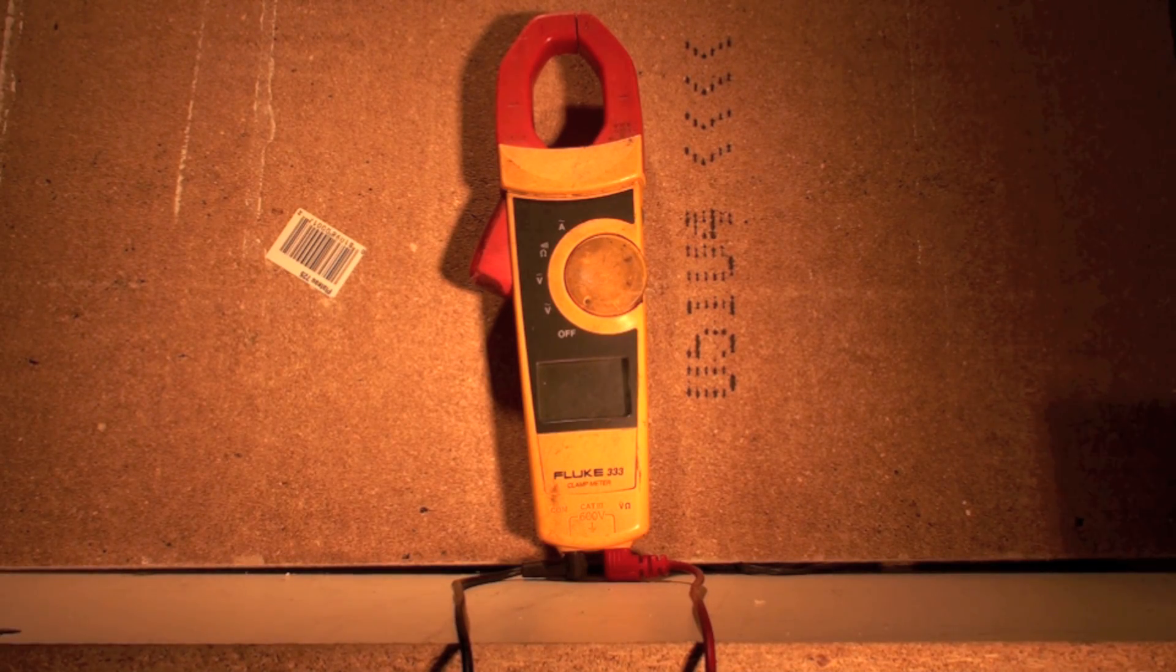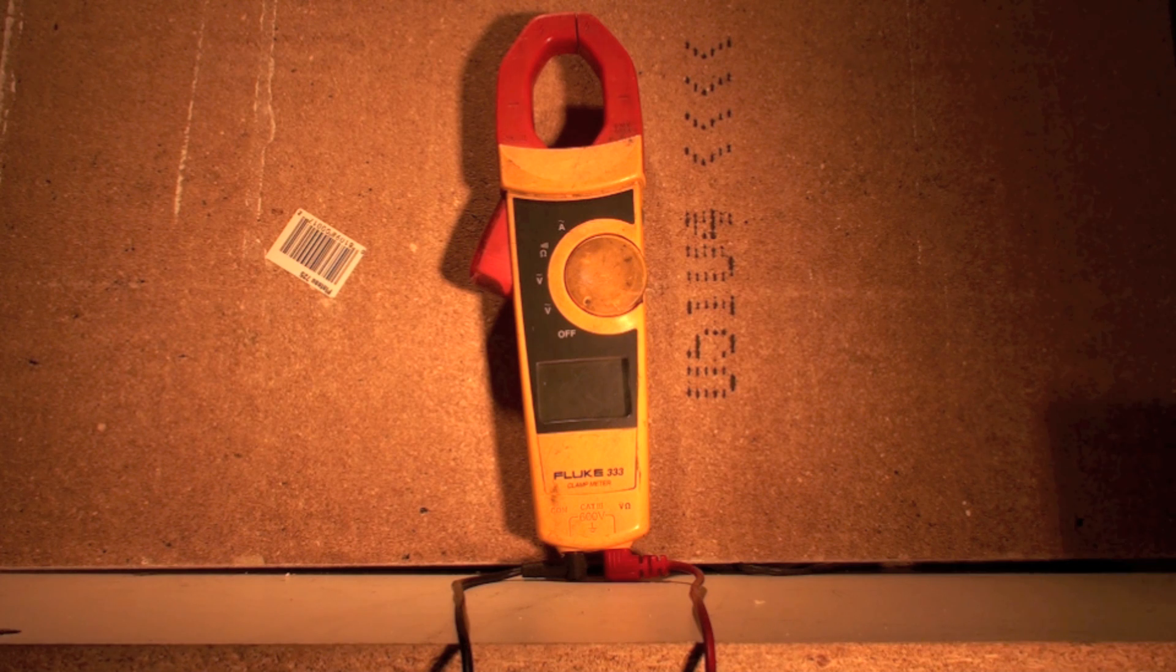This is an auto-ranging digital clamp meter. You can see the clamp on top - it's a Fluke 333 with a dial in the center, readout towards the bottom, and the leads come out the bottom. This is pretty much a standard meter you're going to see in most usage for HVAC and a lot of other things too.